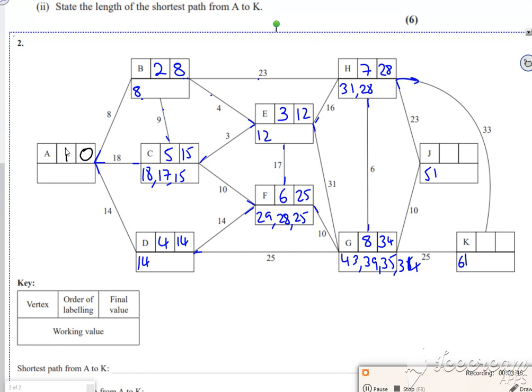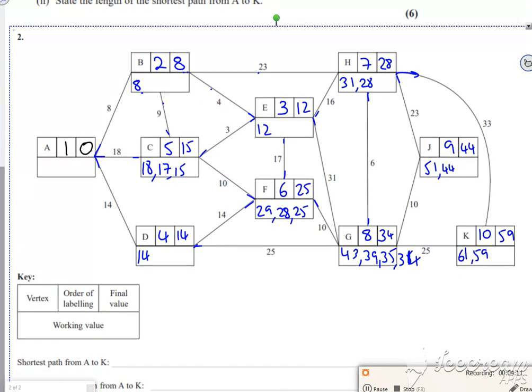Looking clockwise round, that one's done, 34 add 10 is 44, 34 add 25 is 59, and then all the others are done. Take a step back, let's go with 9 for 44. I can't update K from there, there's no direct connection. So 10 goes 59, so there we go.